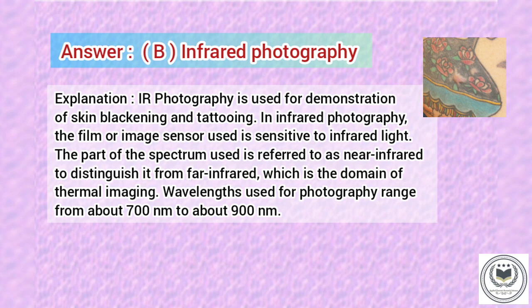Explanation. Infrared photography is used for demonstration of skin blackening and tattooing. In infrared photography, the film or image sensor used is sensitive to infrared light. The part of the spectrum used is referred to as near-infrared, to distinguish it from far-infrared, which is the domain of thermal imaging. Wavelengths used for photography range from about 700 nm to about 900 nm. Thanks for watching our video — please like and share.